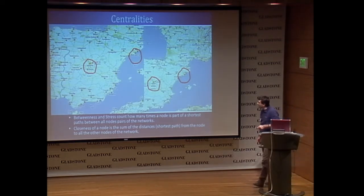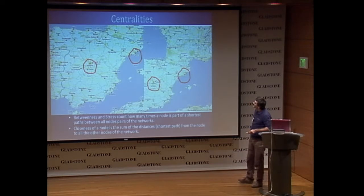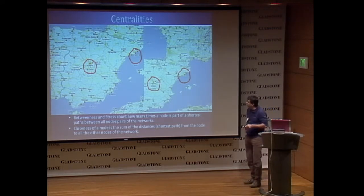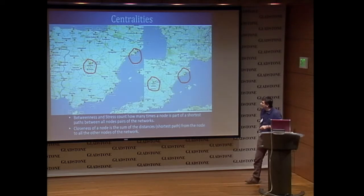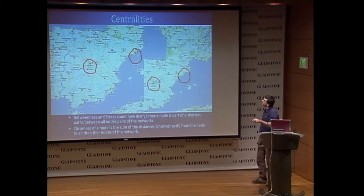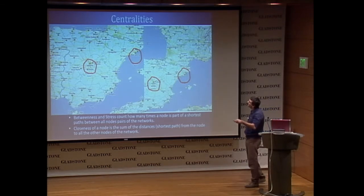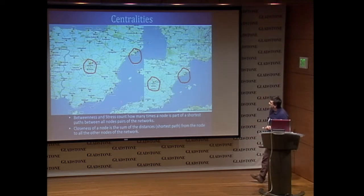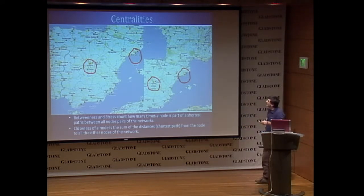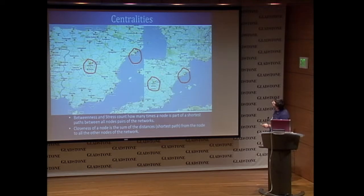Let's focus on two of them: betweenness and closeness. The closeness is the sum of the shortest path distances from one node with respect to the other nodes of the network. For example, looking at the map of Spain, Madrid has high closeness because it is near many of the towns on the map. Betweenness counts how many shortest paths pass through a node. If you consider the map of Spain and France, Barcelona is important because many shortest paths connecting Spain and France pass through Barcelona.